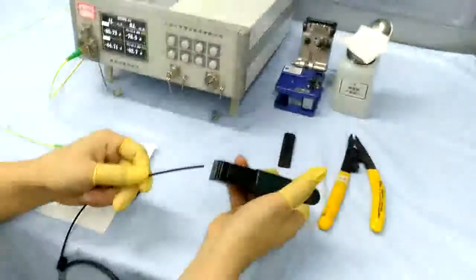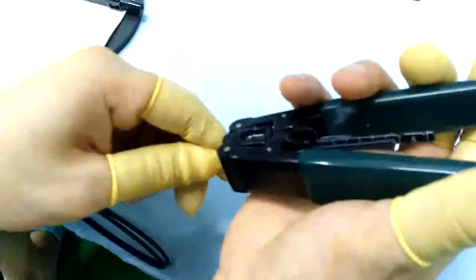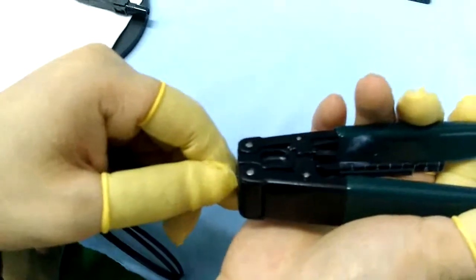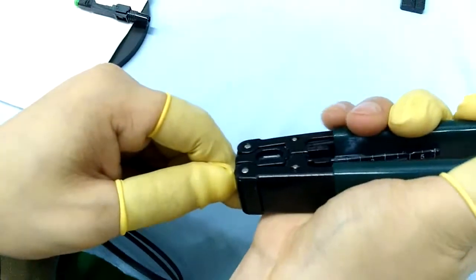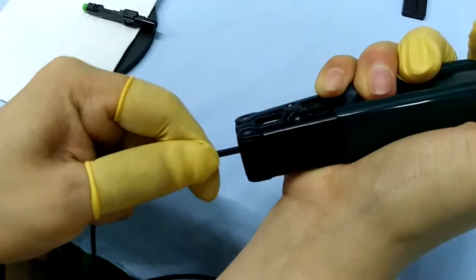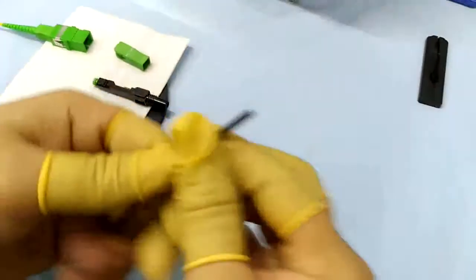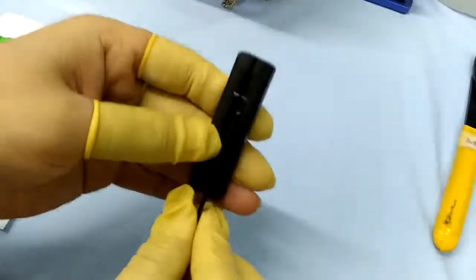Insert the drop cable into the cable stripper. Strip off the cable jacket to about 45 millimeters. Fix the drop cable in the lens guide.